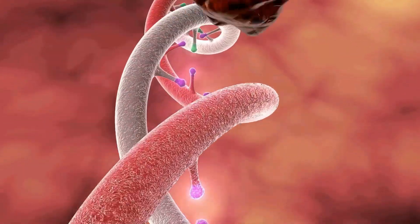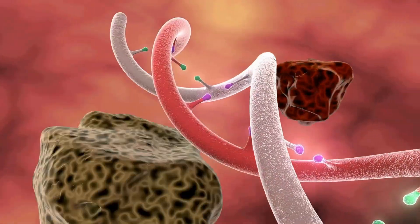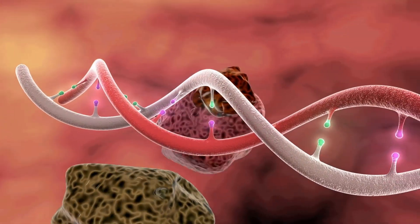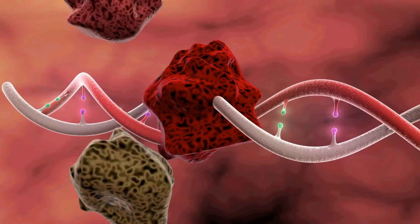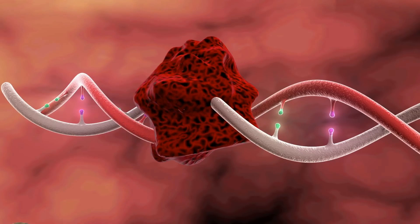But what happens inside our cells that leads from a mutation in DNA to the physical symptoms of a disease? Why do some mutations cause positive outcomes, or no change at all?